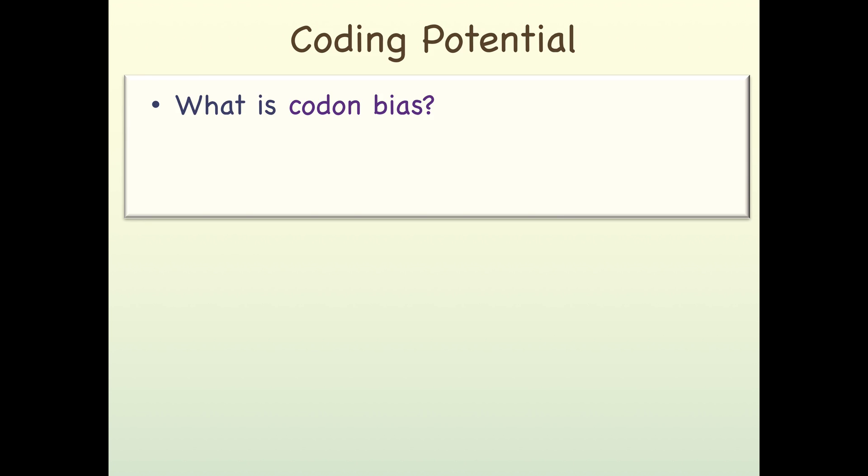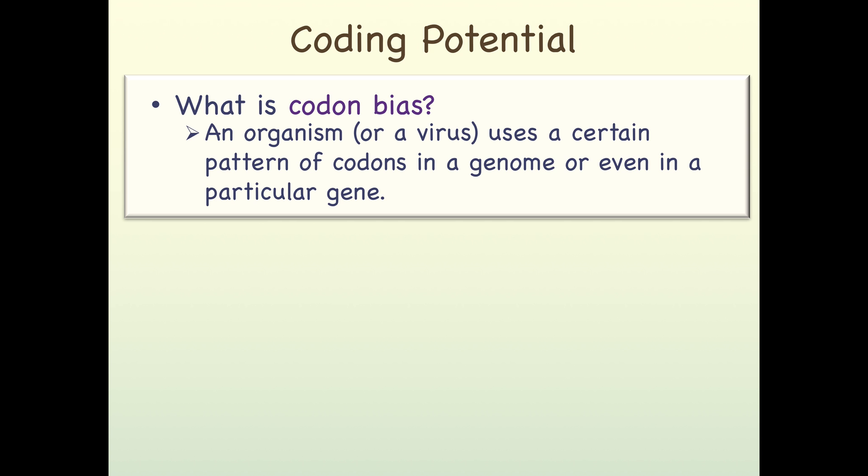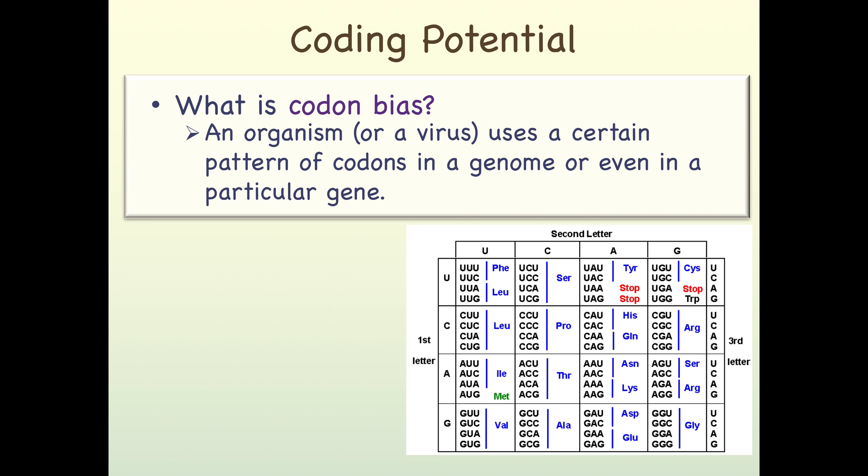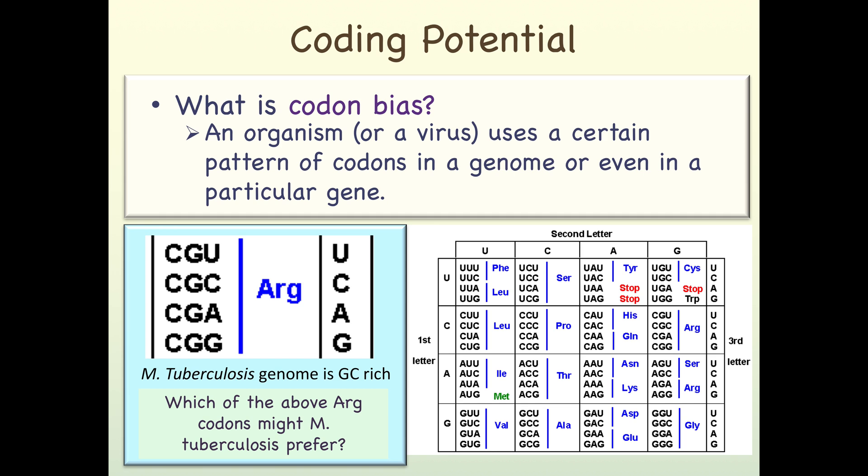The next concept you need to understand is the idea of coding potential. To understand coding potential, we need to understand what codon bias is. All organisms or viruses use a certain pattern of codons in a genome or even in a particular gene, and this use or playing favoritism with codons creates a pattern. For example, the M. tuberculosis genome is very rich in GCs - the majority of the nucleotides in the genome are GCs rather than A's and T's. We know that there are 20 amino acids. However, there are a choice of 61 codons for those 20 amino acids - 61 because three out of the 64 possibilities for triplets are stop codons.